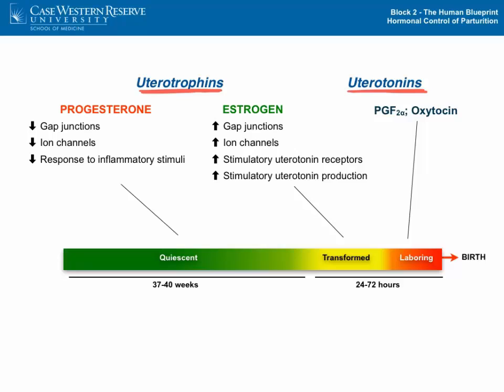Progesterone, as its name implies, is progestational — it causes changes in the uterus that promote the quiescent state. Estrogens, on the other hand, oppose the actions of progesterone and generally increase the function of the uterus in terms of its laboring state.